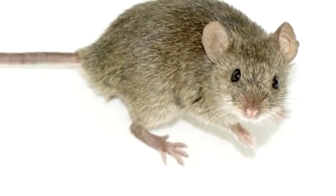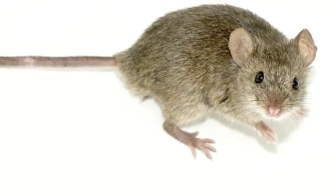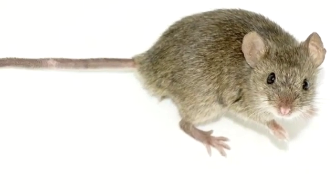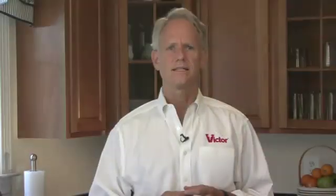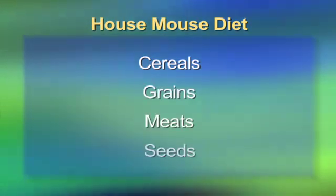The house mouse is dusty gray in color and normally 2½ to 4 inches in length. Its nesting areas include cluttered areas such as closets or garages and base voids behind appliances. The house mouse diet consists of cereals, grains, meats, and seeds.